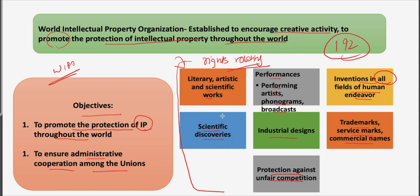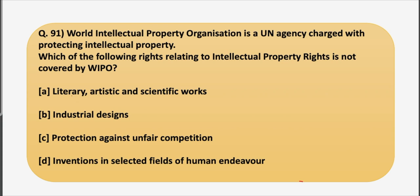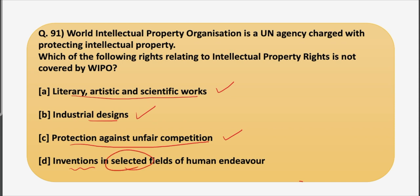Now let's move back to the question to answer it. Option A says literary, artistic and scientific works — this is covered. Industrial designs — also covered. Protection against unfair competition — also covered. Option D says inventions in 'selected' fields of human endeavor. But we read that it covers 'all' fields of human endeavor, not 'selected'. So the correct answer is option D.